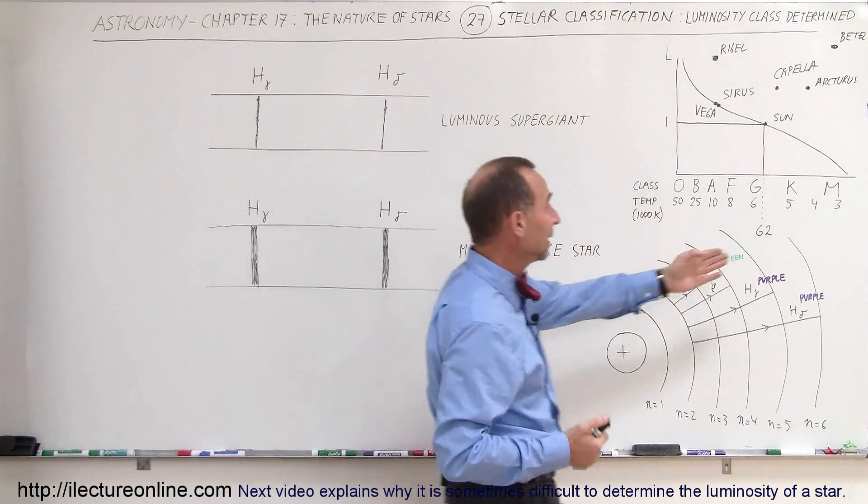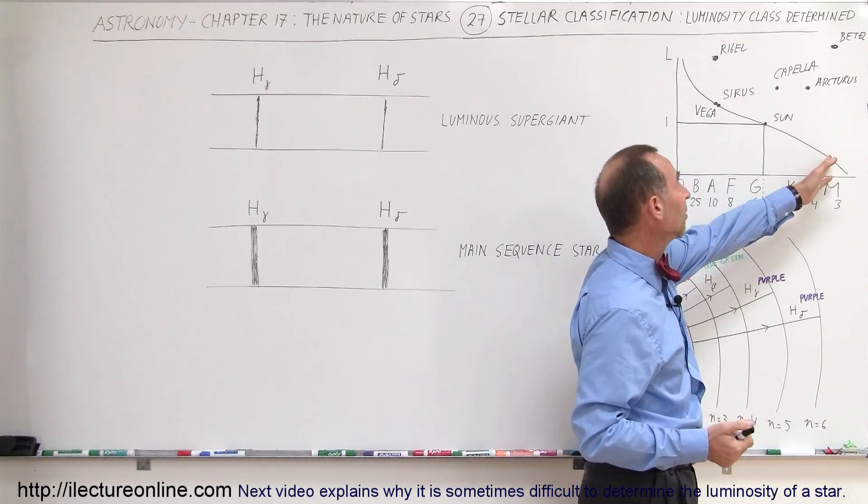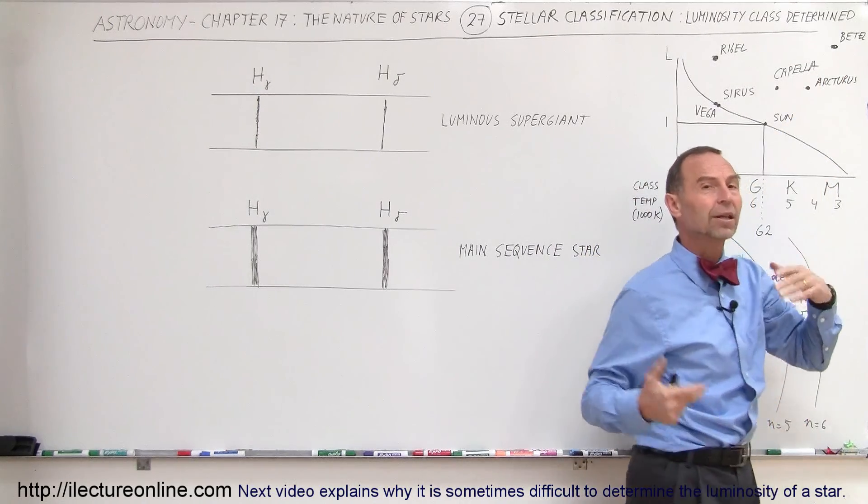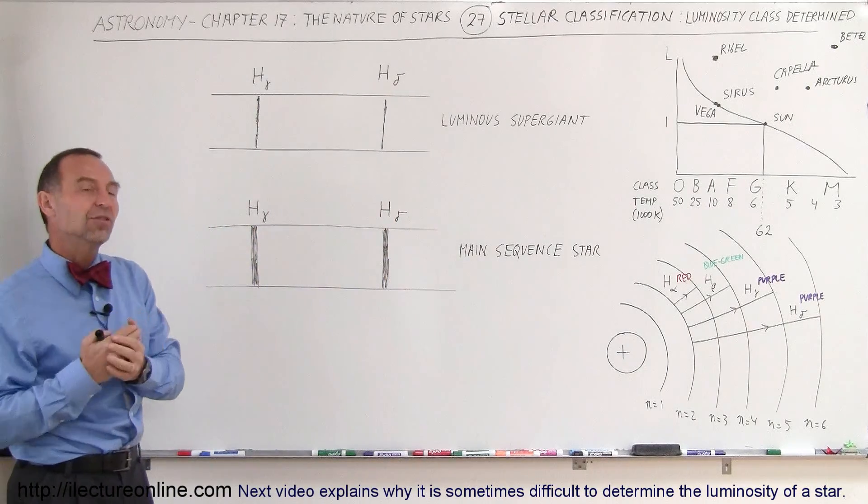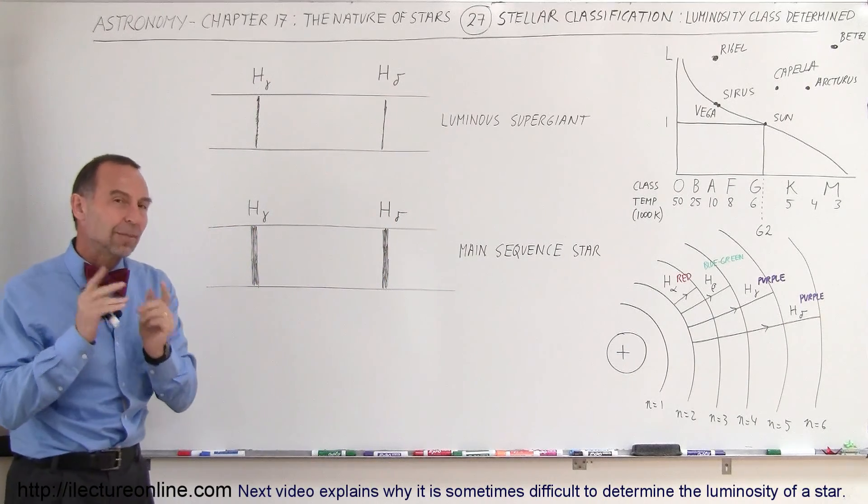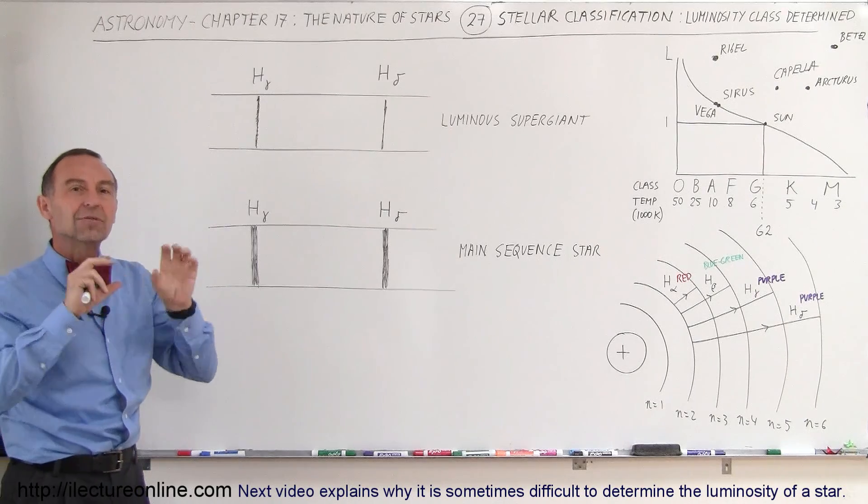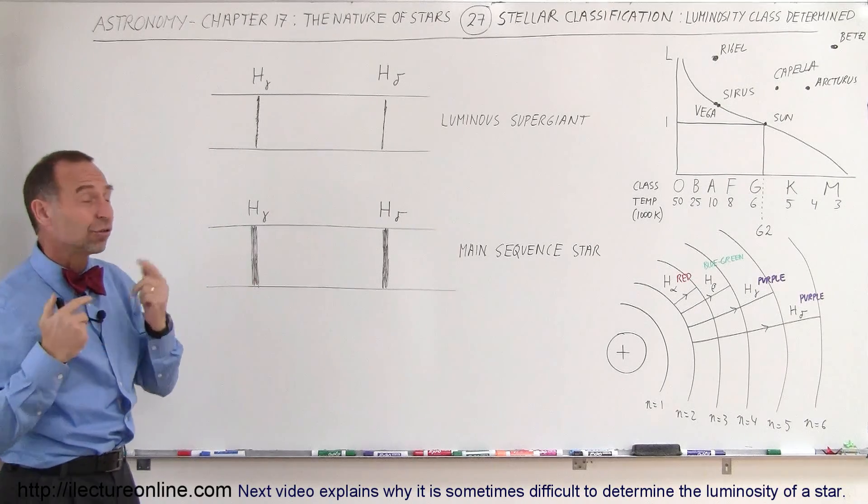For example, we may have an M-class star. It could be a main sequence star, it could be a red giant. How do we tell the difference? Well, it turns out that they may both have the same surface temperature and they may both have the same color, but the density of the gases in the outer layers of the stars are very different.